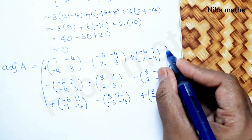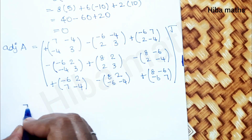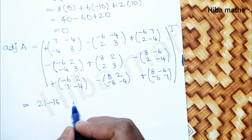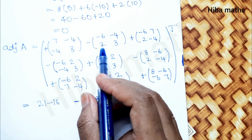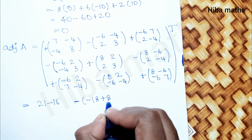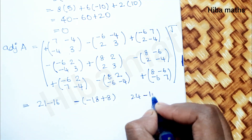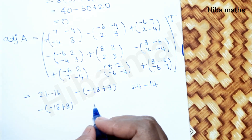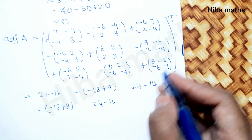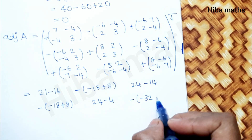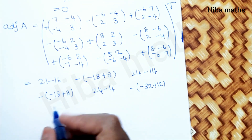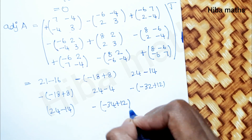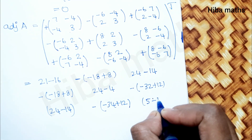Computing the cofactor values: C₁₁ = 21 − 16 = 5; C₁₂ = −(−18 − (−8)) = −(−10) = 10; C₁₃ = 24 − 14 = 10. For second row: C₂₁ = −(−18 − (−8)) = 10; C₂₂ = 24 − 4 = 20; C₂₃ = −(−32 − (−12)) = 20. For third row: C₃₁ = 24 − 14 = 10; C₃₂ = −(−32 + 12) = 20; C₃₃ = 56 − 36 = 20.